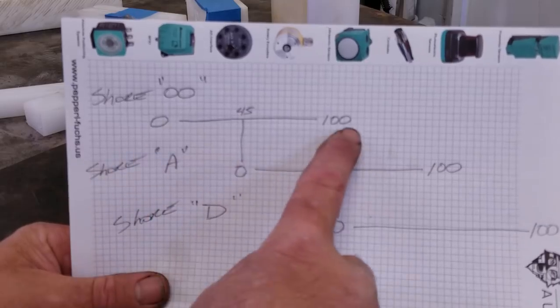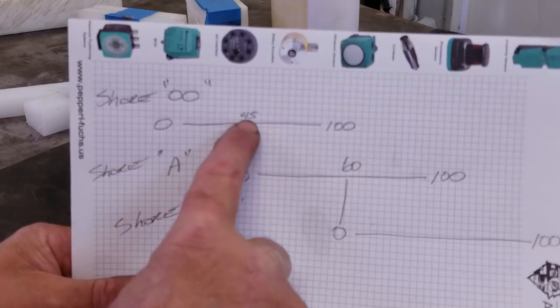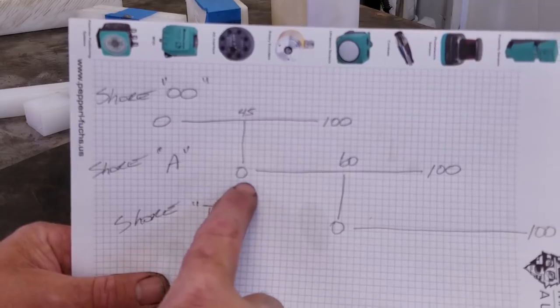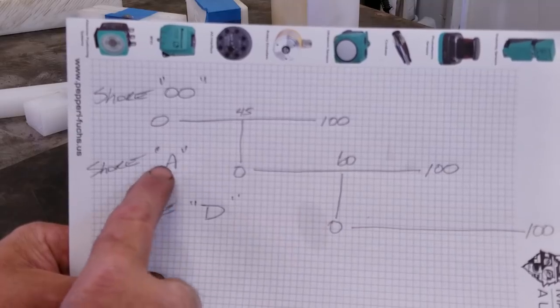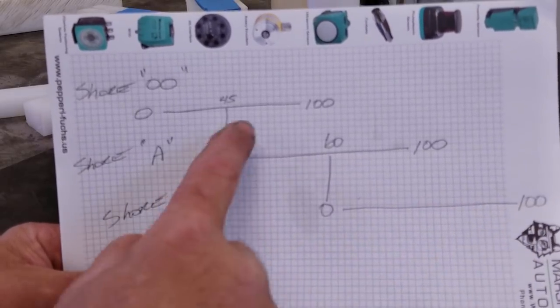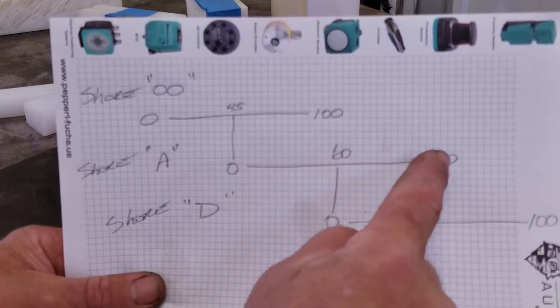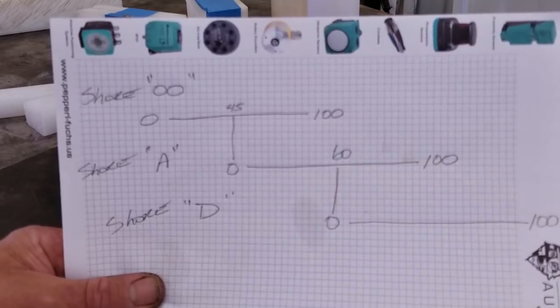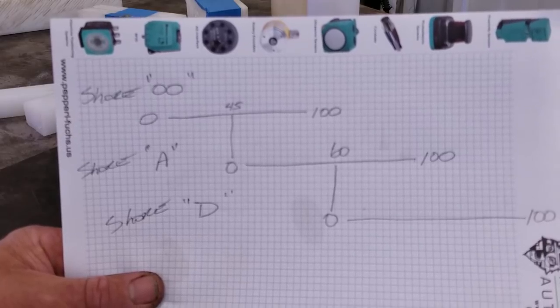The shore double aught starts at zero to a hundred and at right around 45 scale on double zero is when shore A starts at zero. Shore A goes to a hundred and right around between 60 and 65 A scale is when our shore D scale starts and that goes to a hundred. So the scales do overlap. Within this range between 60 and a hundred, you could call out scale A or D either one, depending on what your spec is or what the customer is asking for.